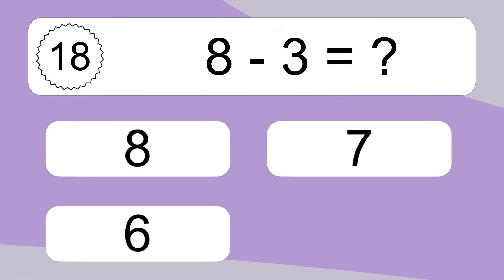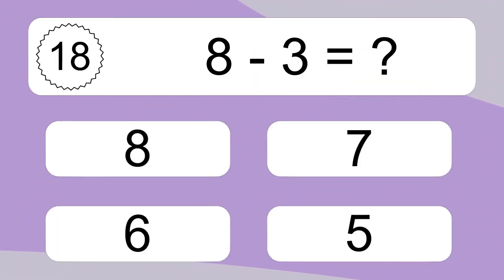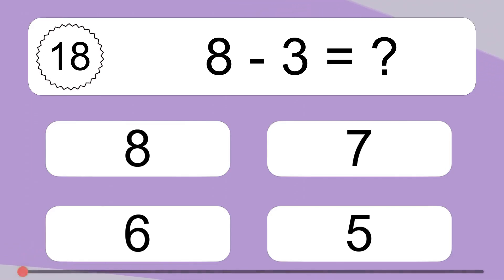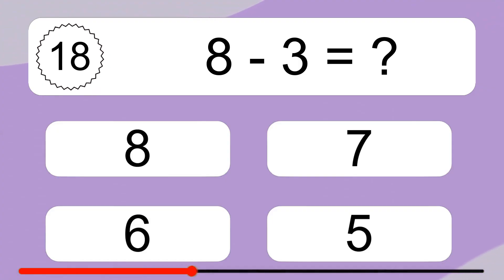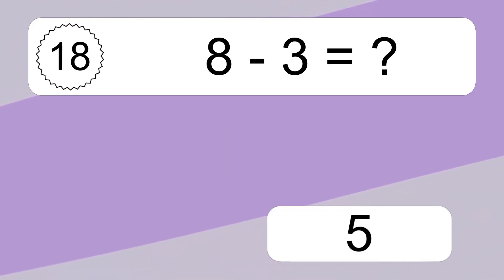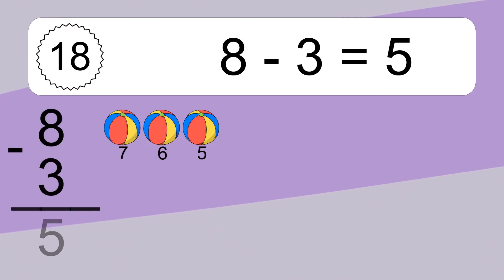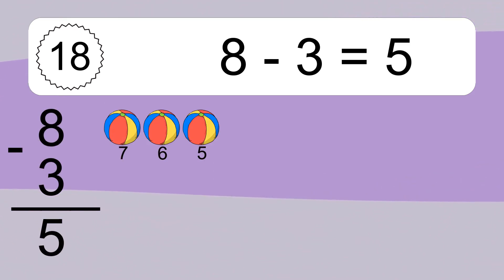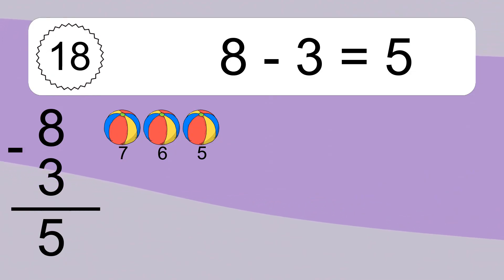8 minus 3 equals what? 8 minus 3 equals 5. Let's count it: 7, 6, 5.